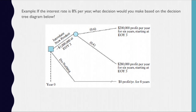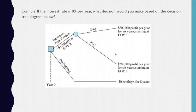The other choice is to do nothing and gain a zero profit per year for 8 years. Going back to the introduction of new product, it will give us 2 chances: 60% will give us $200,000 of profit per year for 6 years starting at end of year 3. The other 40% will give us $280,000 of profit per year for 6 years starting at end of year 3. To solve this problem, we will sum the net present worth of all the possible outcomes.